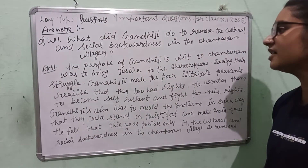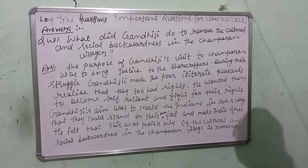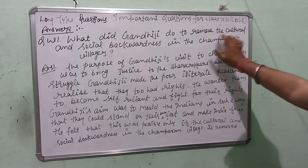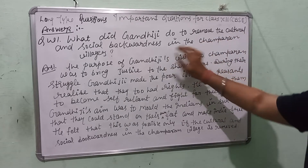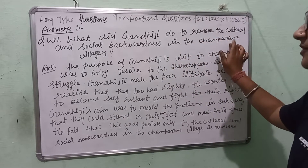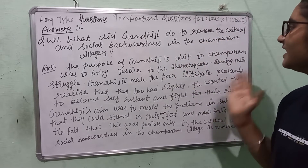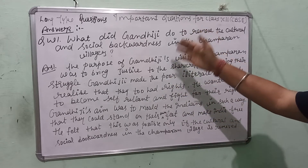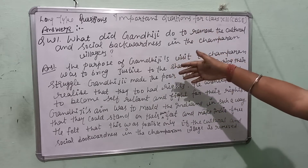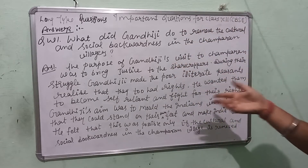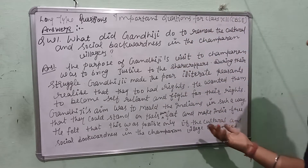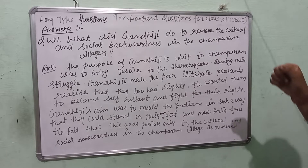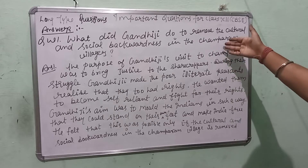The first question is: What did Gandhi ji do to remove the cultural and social backwardness in the Champaran villages? What did Gandhi ji do to remove cultural and social backwardness in the Champaran villages?